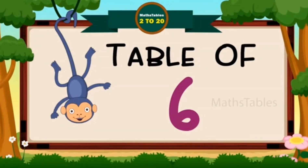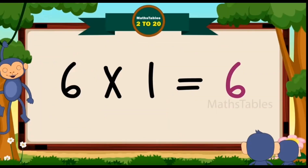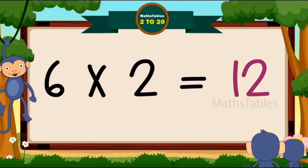Table of six. Six ones are six. Six twos are twelve.